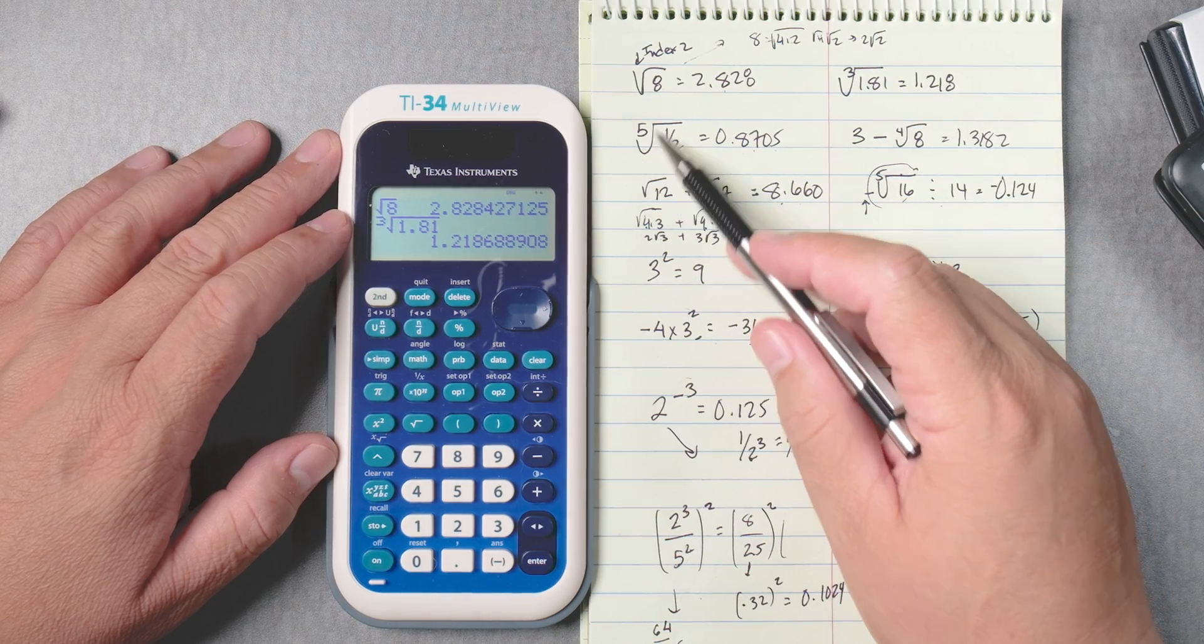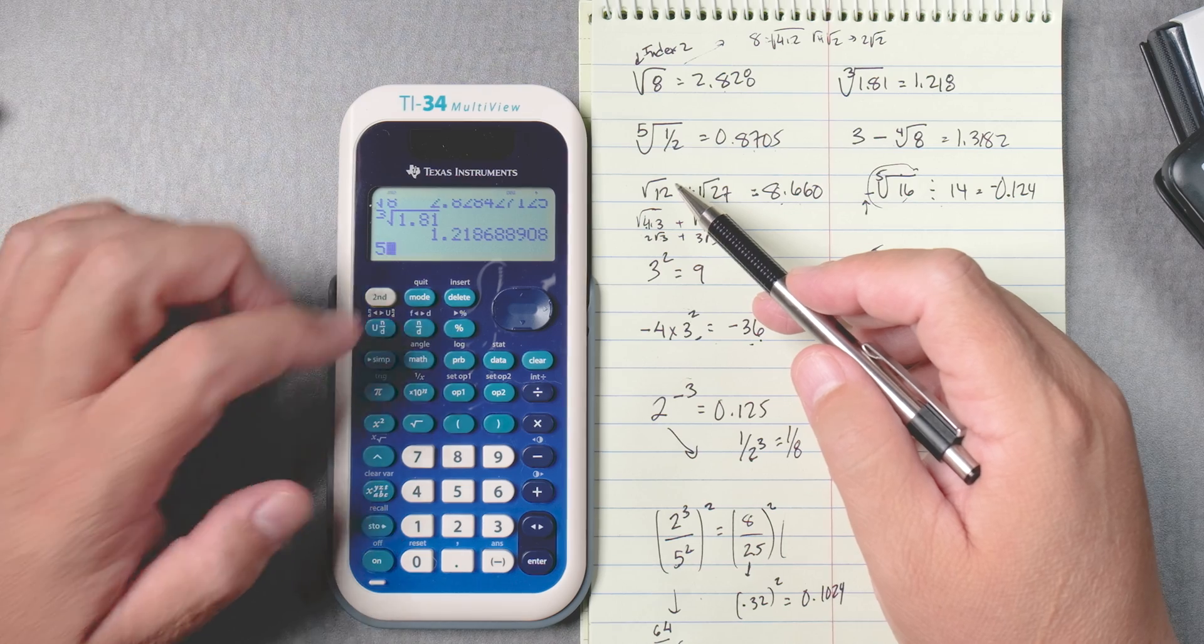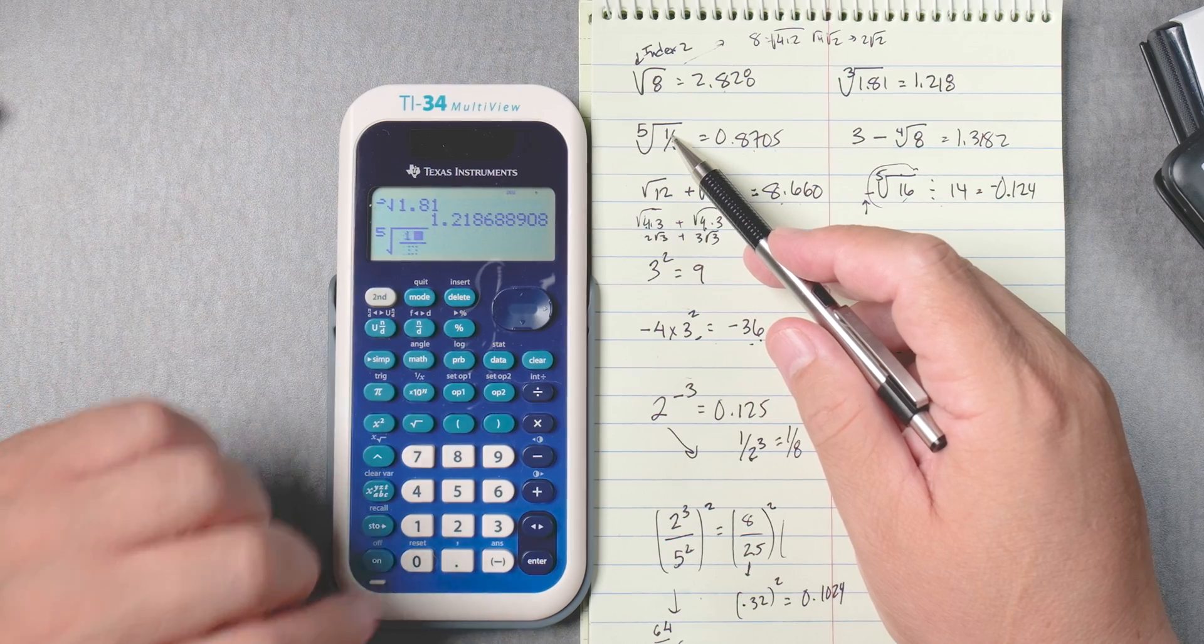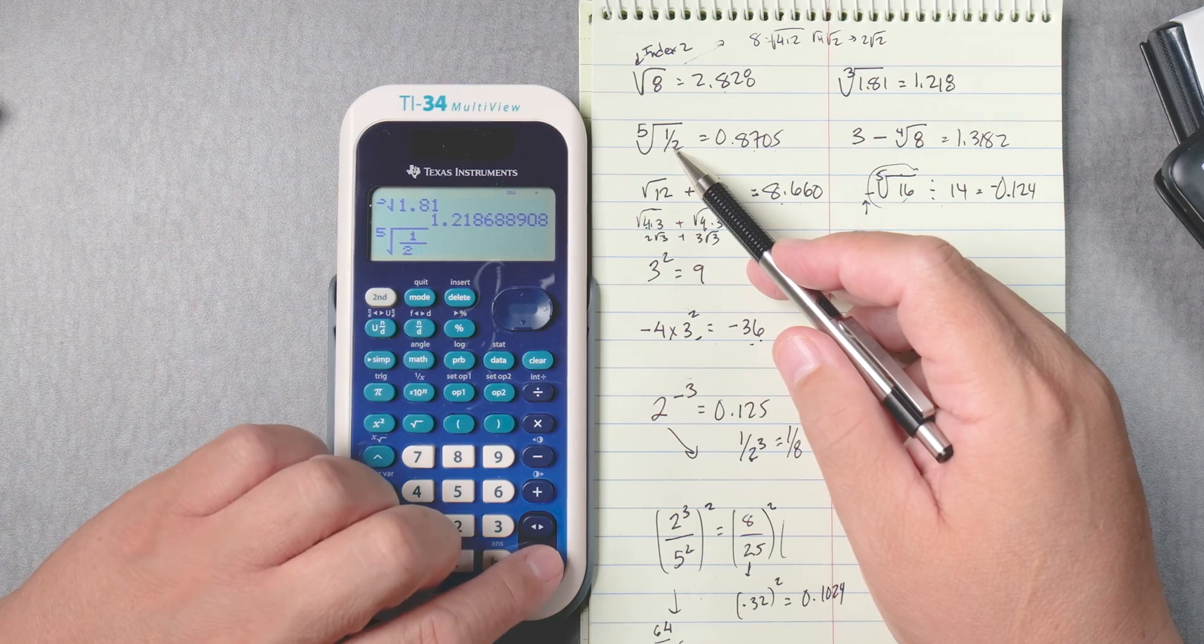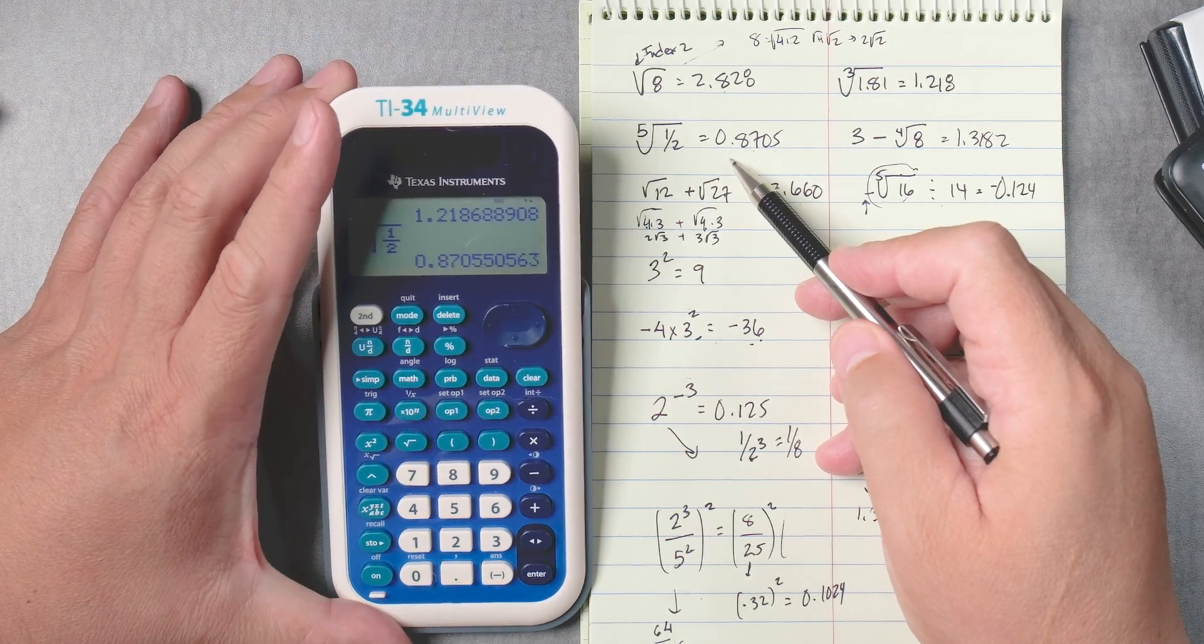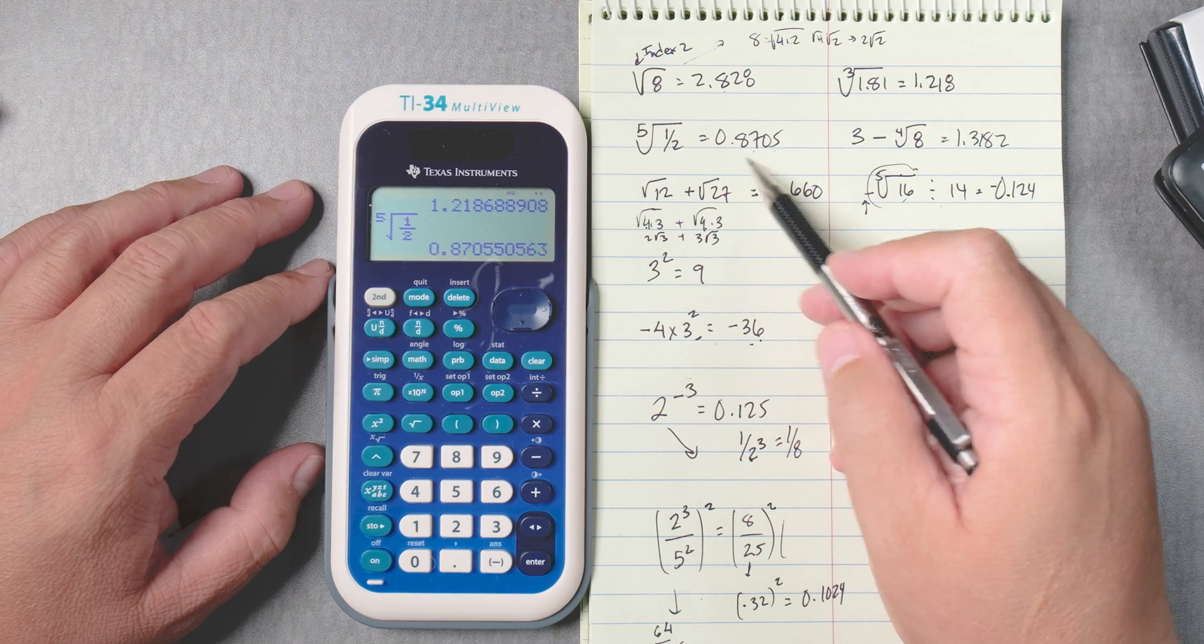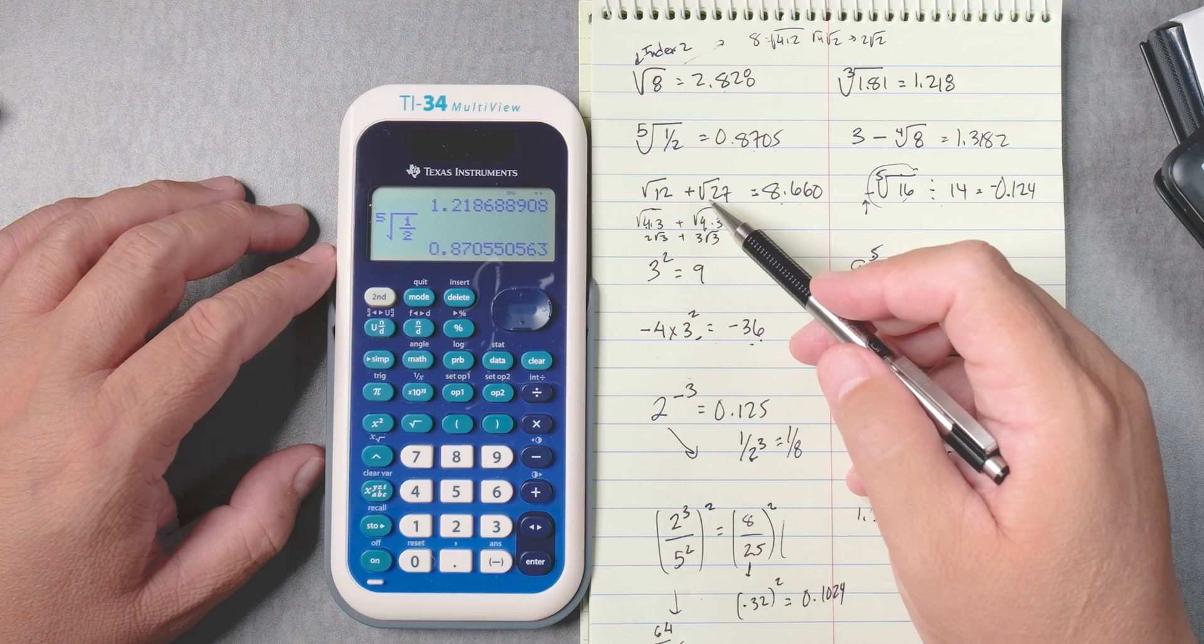Okay, let's do this one. This is the fifth root of half. So we take 5, second, caret, and then it gives you, I'm going to do fraction, 1, bring it down, 2, and then enter. See that? 0.8705. Now in this video, we're not going to tell you how many values to put after the decimal place. Your teacher will tell you about that.